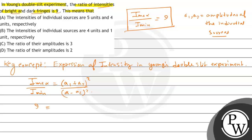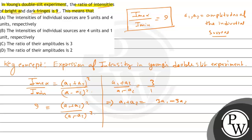So i_max by i_min, that is 9, is equal to (a1 plus a2) whole squared by (a1 minus a2) whole squared. From here we can write that (a1 plus a2) by (a1 minus a2) equals 3 by 1. That means a1 plus a2 equals 3a1 minus 3a2. From here we get 2a1 equals 4a2, meaning a1 by a2 equals 2 by 1. So the ratio of the amplitudes is 2, and option D is correct.